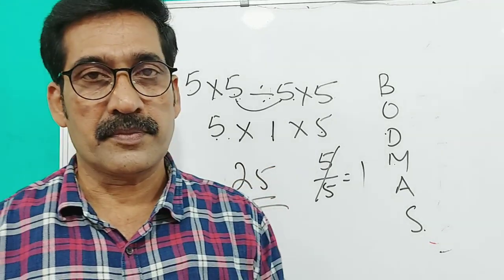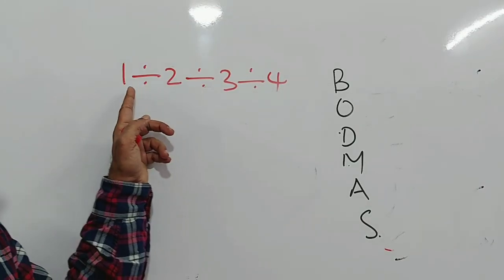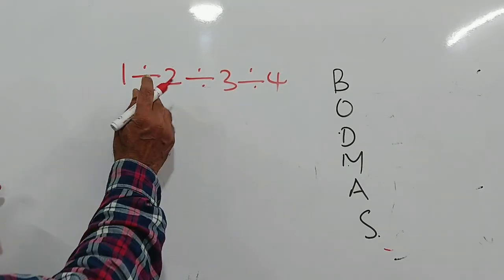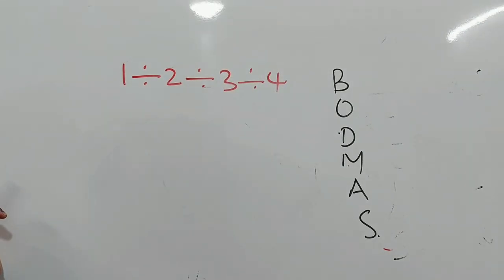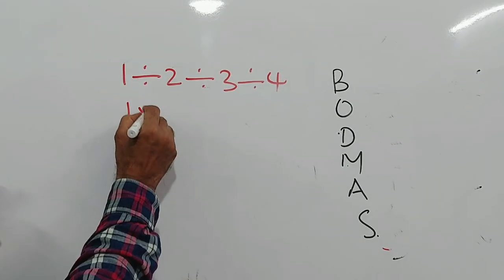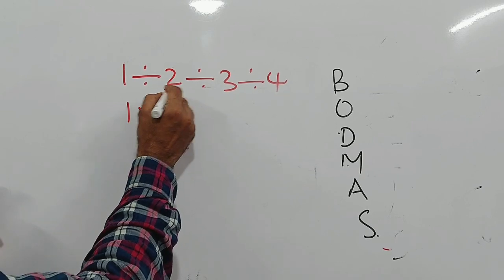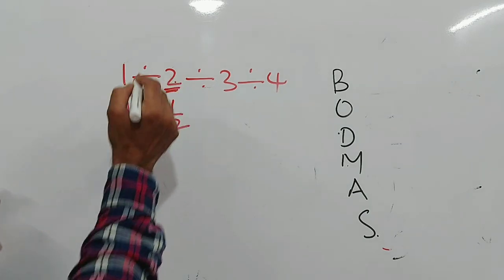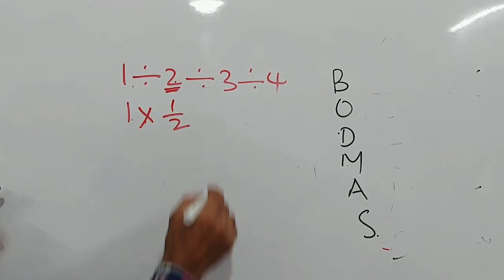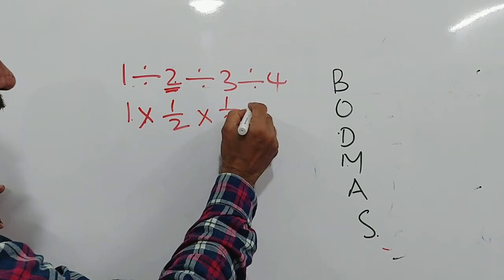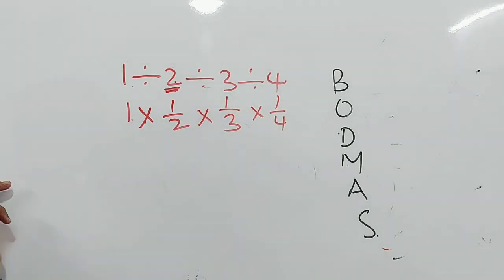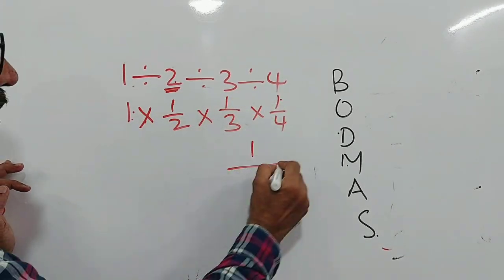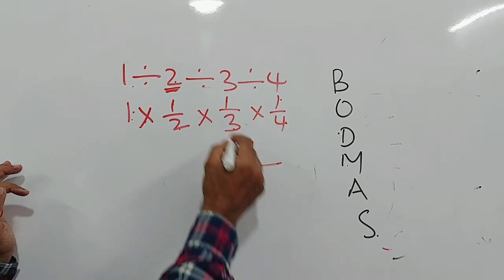Here you can see 1 divided by 2 divided by 3 divided by 4. It is division only throughout, so we can convert each division to multiplication by the reciprocal: 1 into 1/2 into 1/3 into 1/4. The denominator becomes 2 into 3 into 4, which is 6 into 4 equals 24. So the answer is 1 by 24.